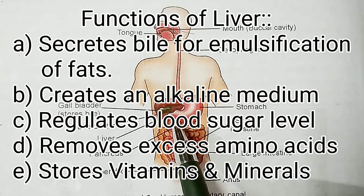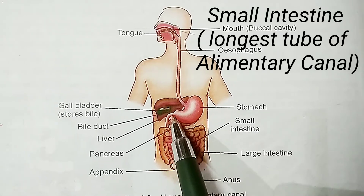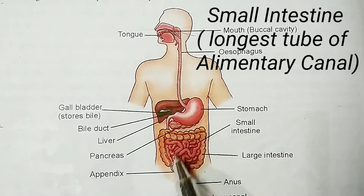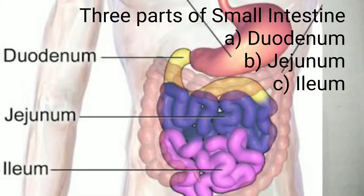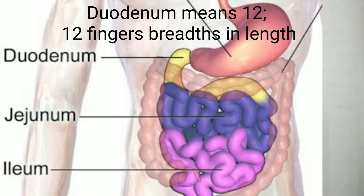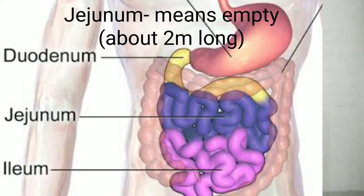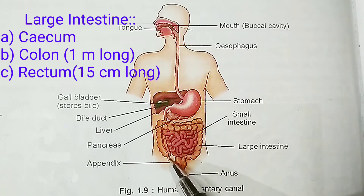The small intestine is the longest tube in the alimentary canal, with a length of around 7 meters. It is divided into three sections: the duodenum (the shortest and most fixed portion, about 12 finger-breadths in length), the jejunum (meaning empty, generally remains empty, around 2 meters long), and the ileum (meaning twisted, around 4 meters long). The small intestine is the main site of digestion and absorption.